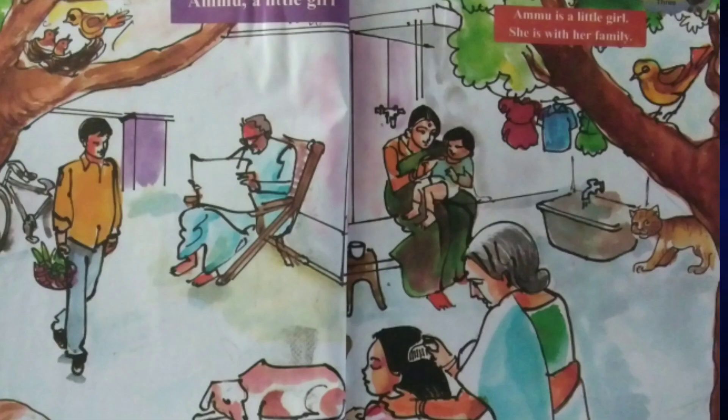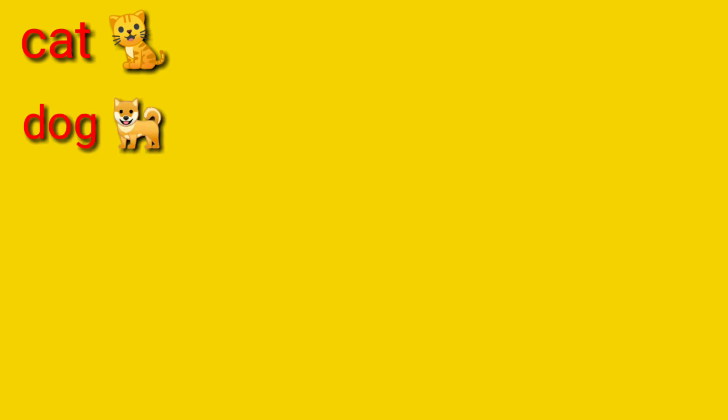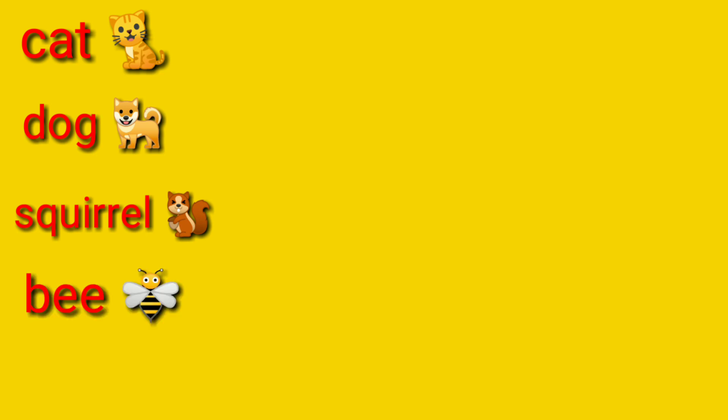Observe the picture. What are the animals and birds you see in this picture? A cat, a dog, a squirrel, a bee, bird.